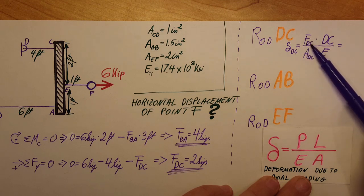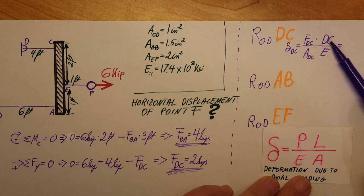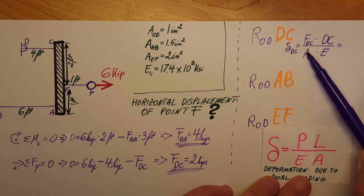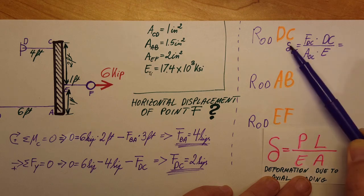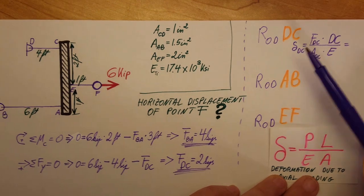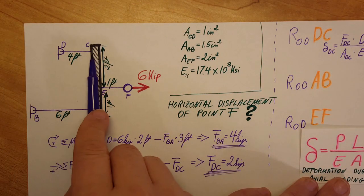the force in DC times the length of DC over the cross-section area of DC times Young's modulus. Now we have all this information, all we have to do is plug it in and we can find the deformation in our piece DC right here.